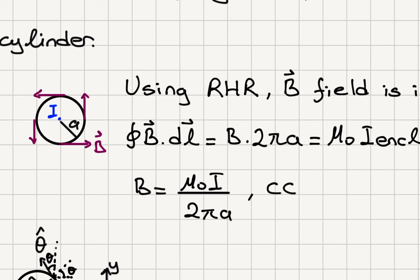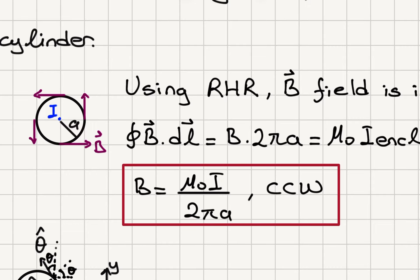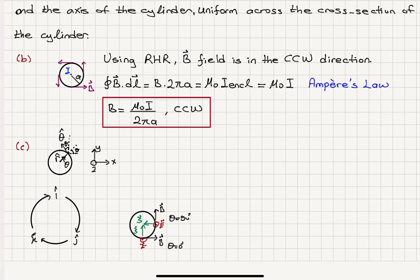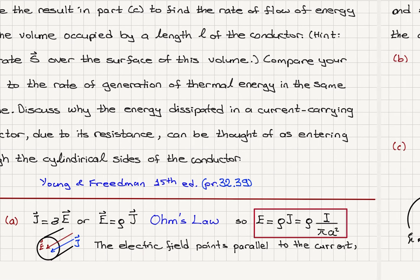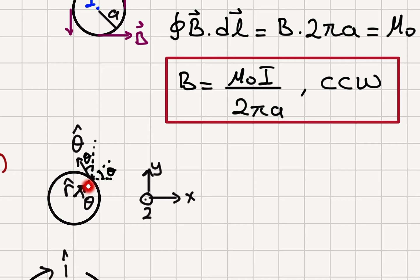The magnetic field B equals mu zero I over 2 pi A, and it is in the counterclockwise direction as indicated. Moving on to Part C: what are the magnitude and direction of the Poynting vector at the same point? The direction of the Poynting vector is the direction in which electromagnetic energy flows into or out of the conductor. Setting up coordinates: r-hat is the radial unit vector, theta-hat is the tangential unit vector, and theta is the angle with respect to the x-axis.